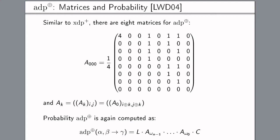This approach is similar, however the matrices are size eight by eight instead of two by two, and again the computation of the probability is similar — you multiply a row vector of all ones, then the sequence of matrices, then a column vector with a one in the first position. In this particular case of the additive differential probability of XOR, there is a symmetry property of those matrices where you can determine every matrix from every other matrix by doing a permutation of rows and columns.